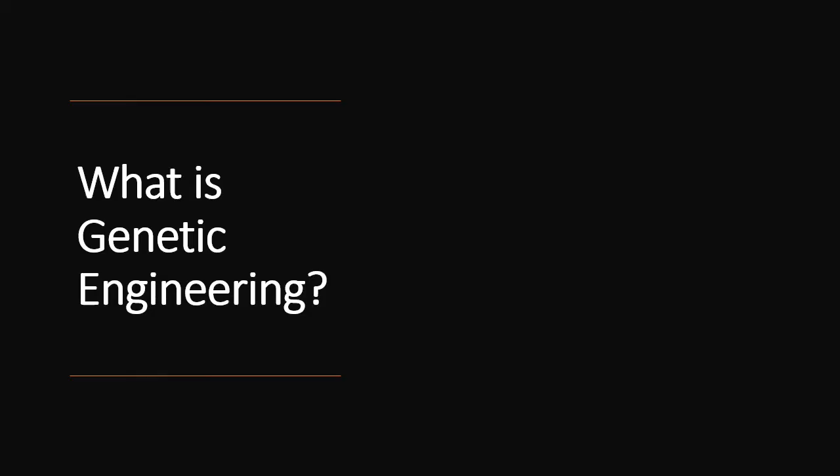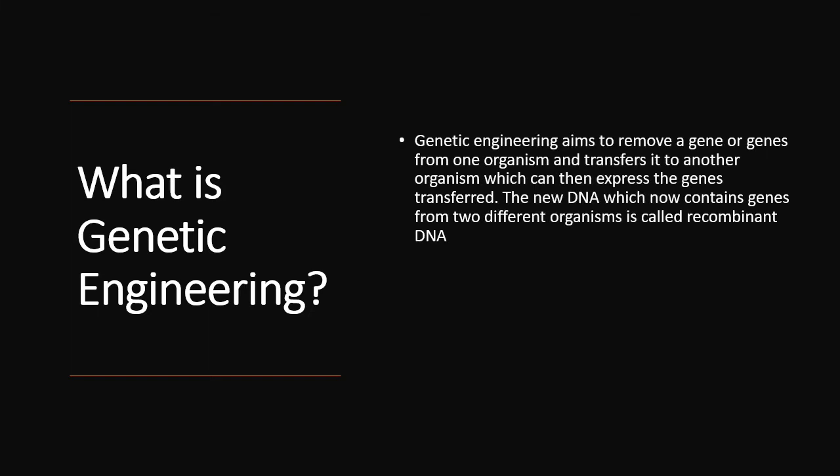Let's start with the definition of genetic engineering. You've probably heard of the term GMO — everybody complains about it: GMO in our foods, GMO in farm animals. GMO stands for genetically modified organism, which is basically an organism that has been genetically engineered to express certain traits. Genetic engineering is a process whereby you remove genes from one organism and transfer them to another organism, which then expresses these genes and basically has a combination of traits.